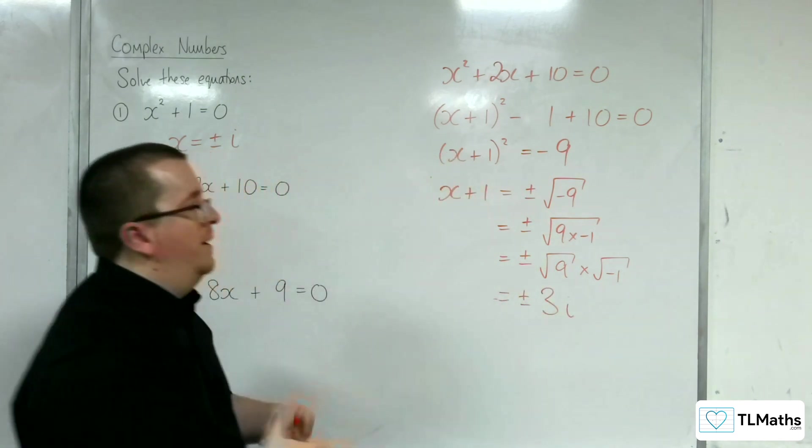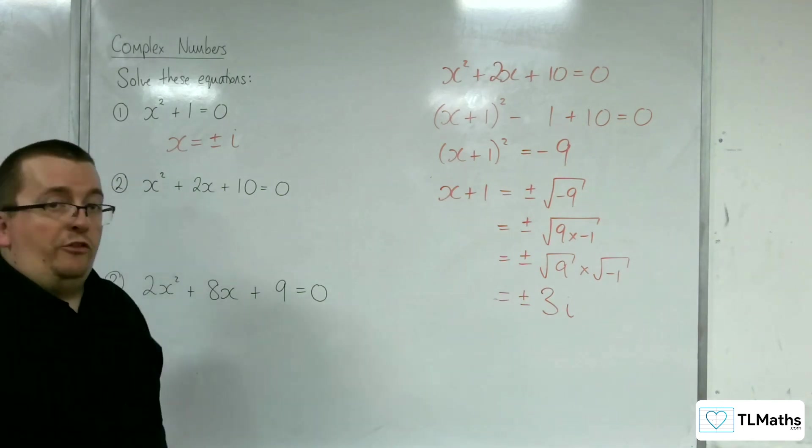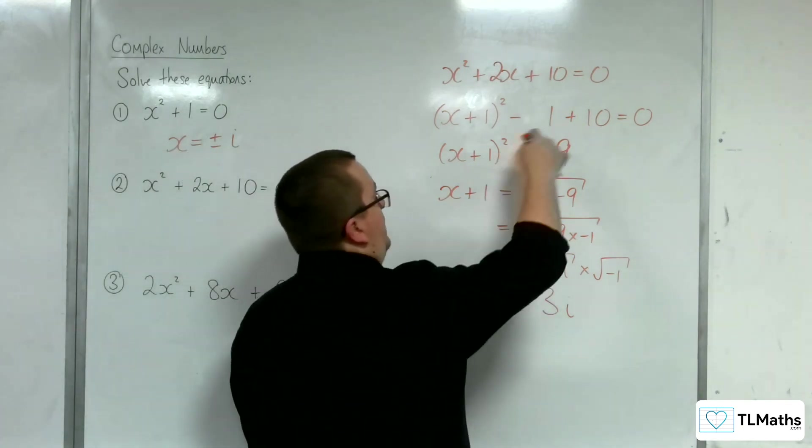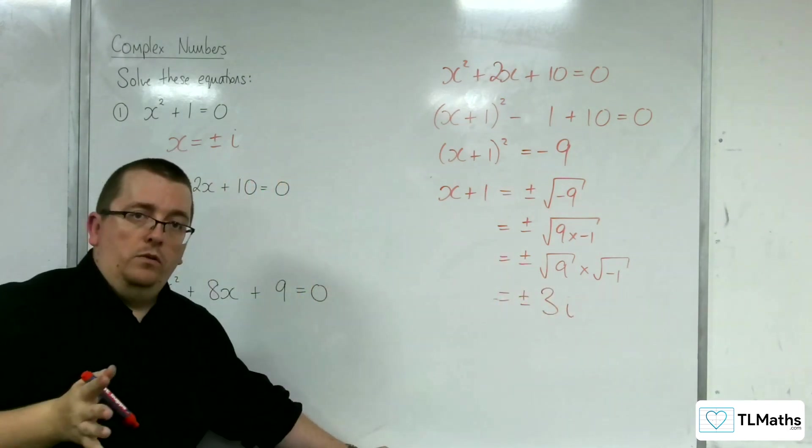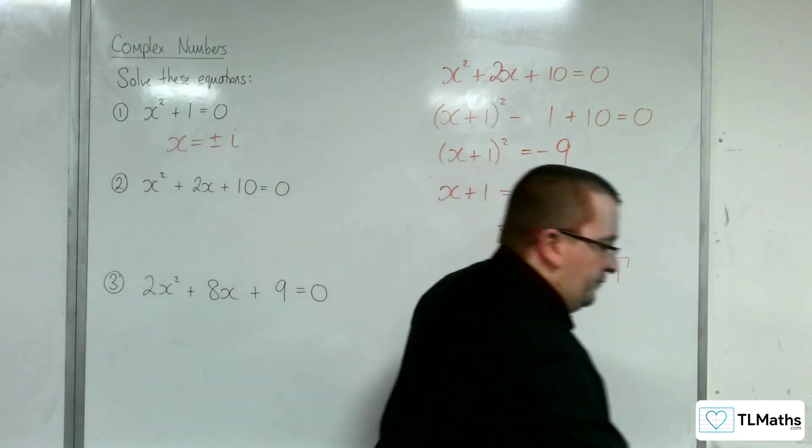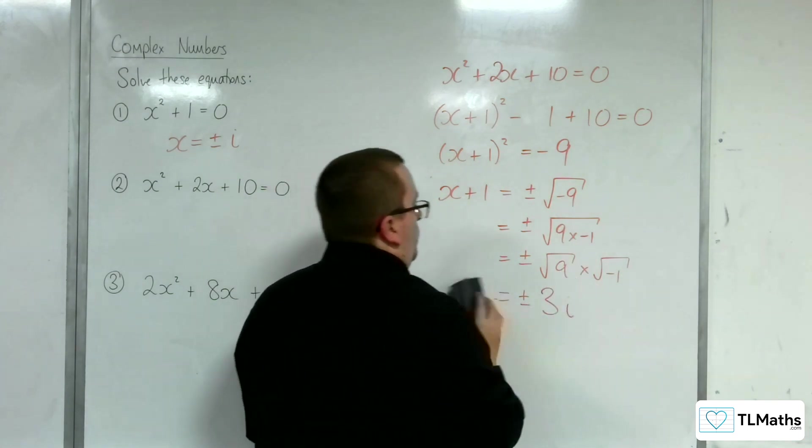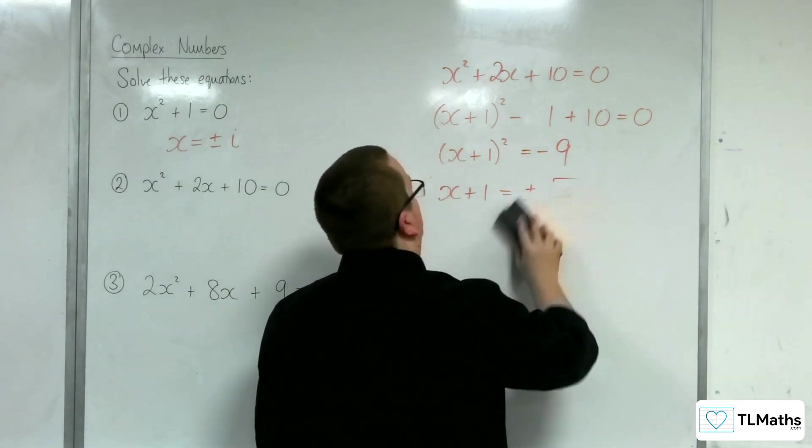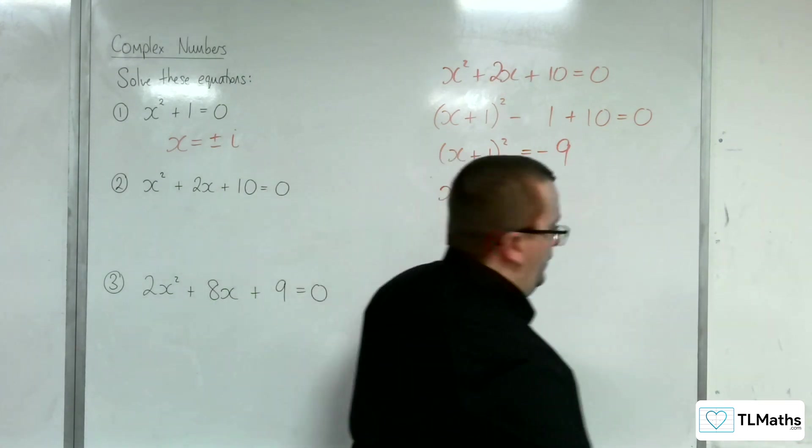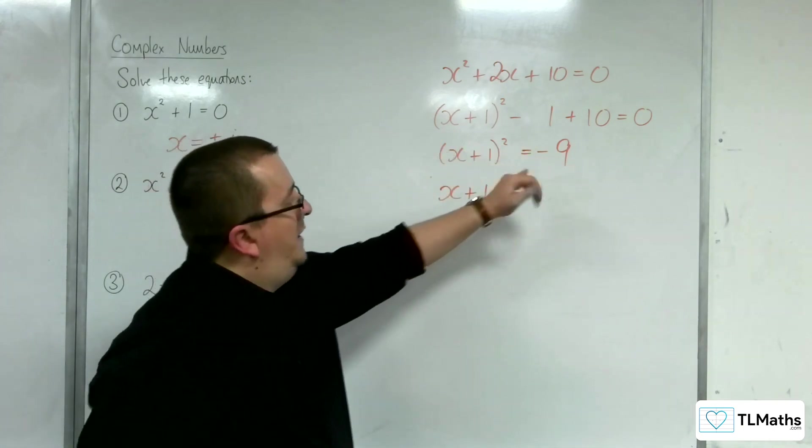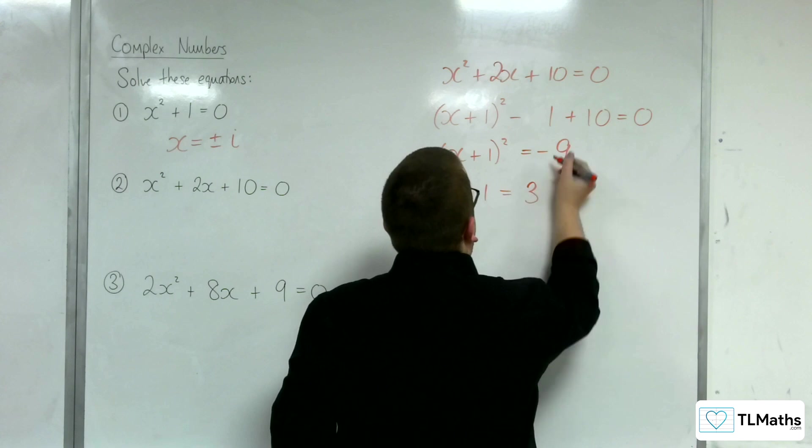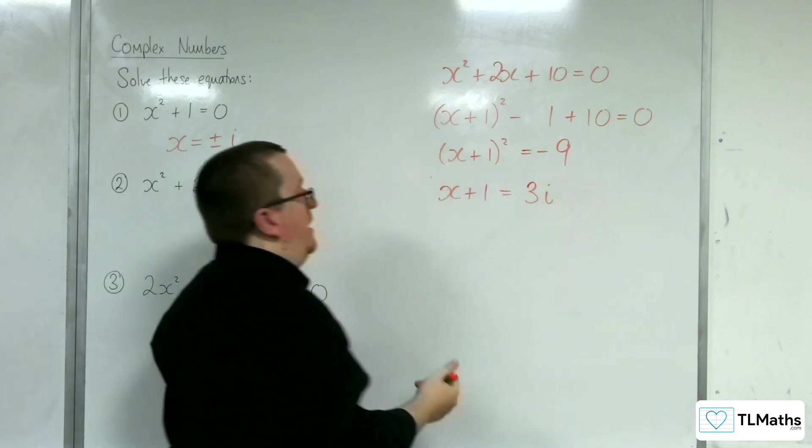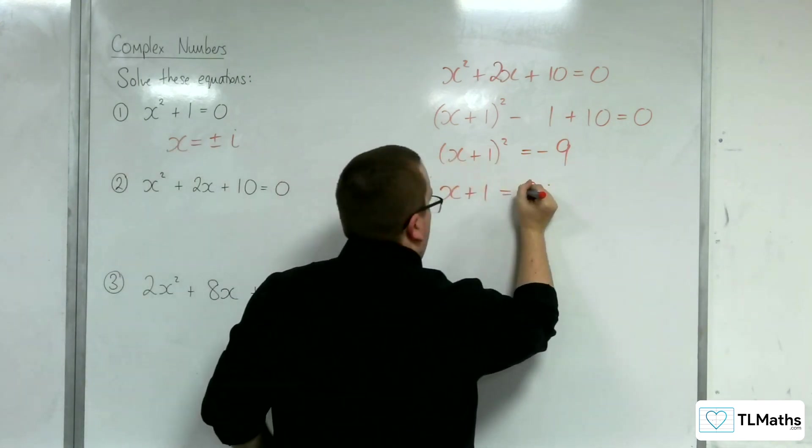So, we've currently got plus or minus 3i. I would expect you to be able to go from this line to that stage in one go, rather than having to write out all those extra lines of working. So, how I would want us to do this is say square root of 9 is 3, and because we're square root of negative, we have plus or minus 3i.